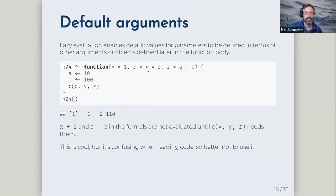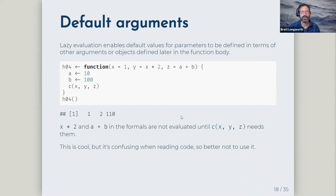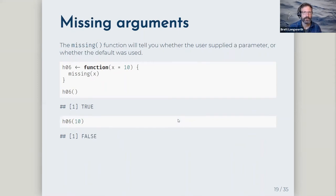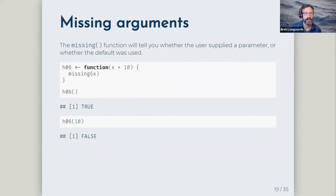The missing() function tells you whether the user supplied a parameter or whether it came from the default. If missing returns true, the user did not supply the parameter. For example, the sample() function uses this: 'size' is not required. If you don't provide it, sample uses the length of the vector you want to sample. Hadley rewrites it with size = NULL, which gives the reader a clue that size isn't a required parameter.